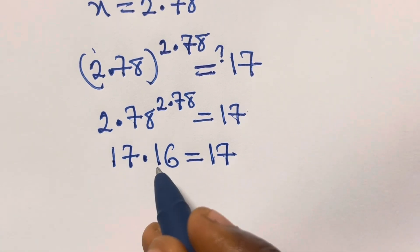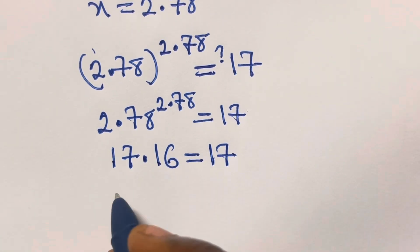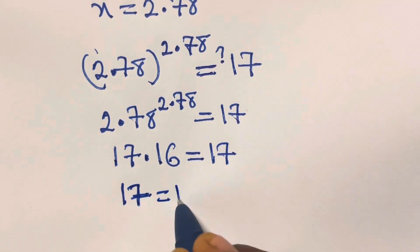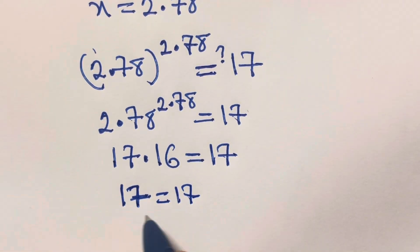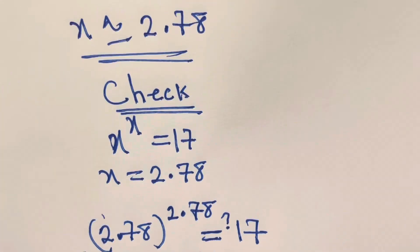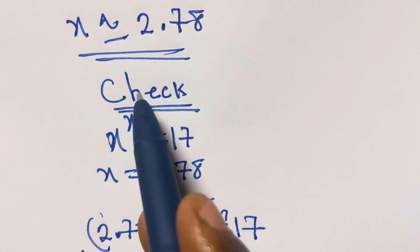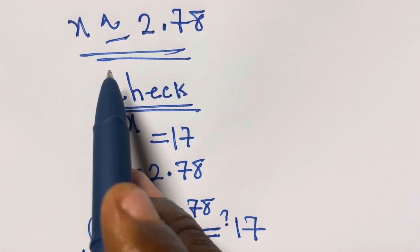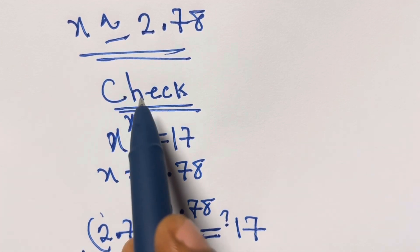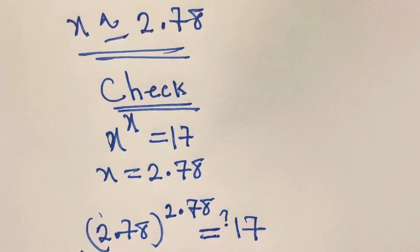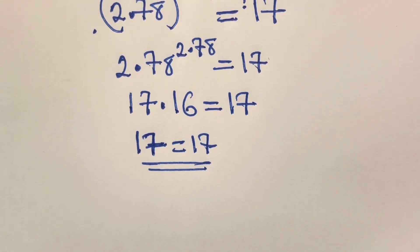Since the decimal is above 5, we can round up and say 17.16 is approximately 17 equals 17. So x equals 2.78 satisfies the given equation x raised to the power x equals 17. This is the first way of solving this, and this is the end of our solution. Thank you.